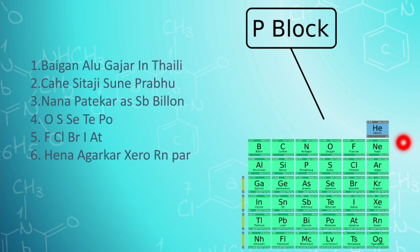Next elements are helium neon argon krypton xenon radon. The memorized trick for it is hena agarkar zero ranpur. This group elements are also called as noble gases.